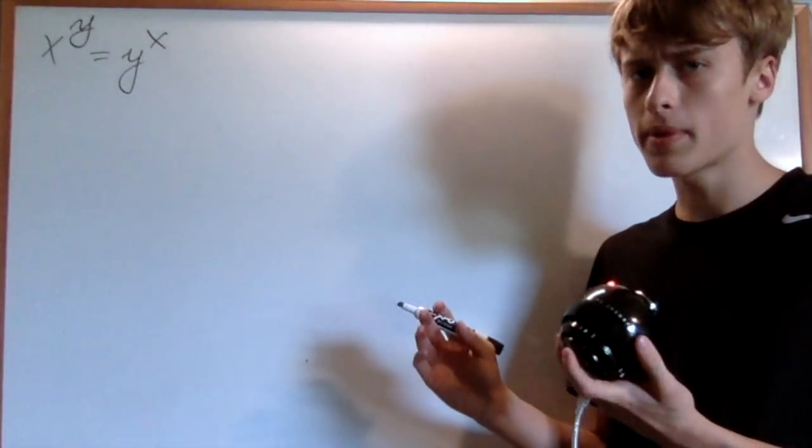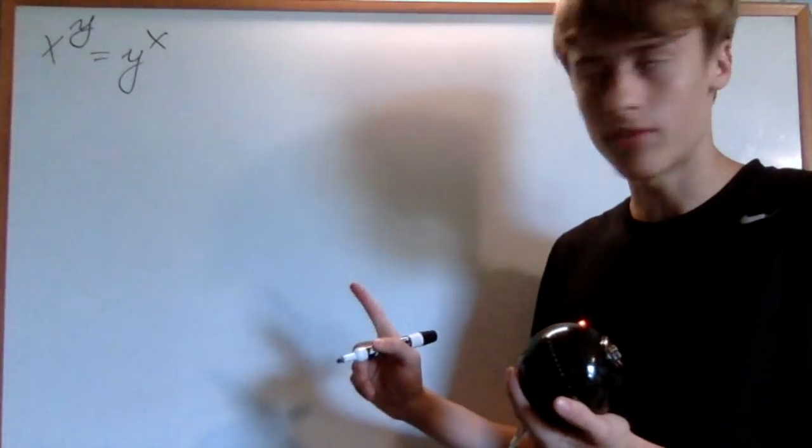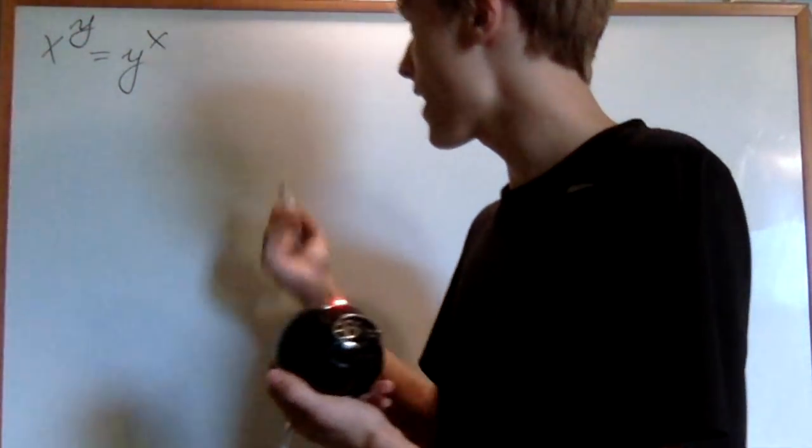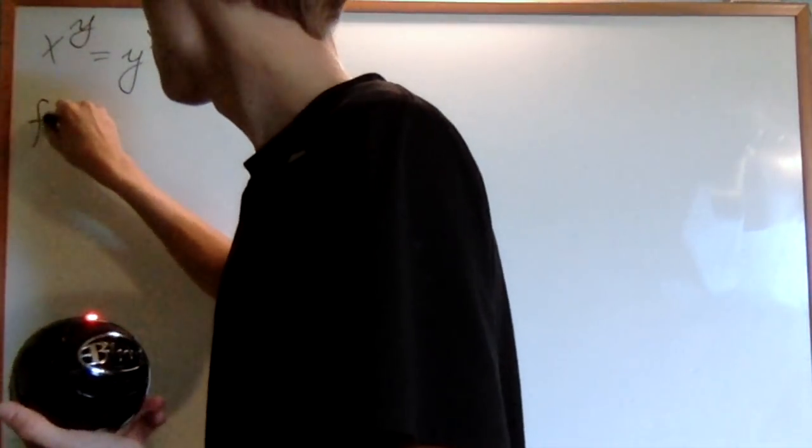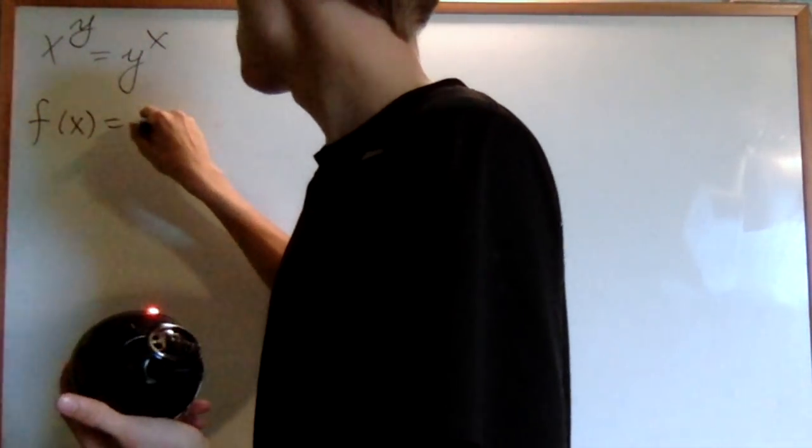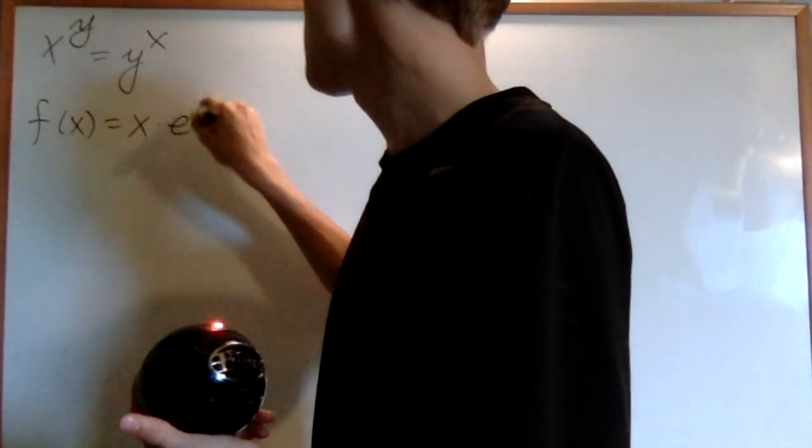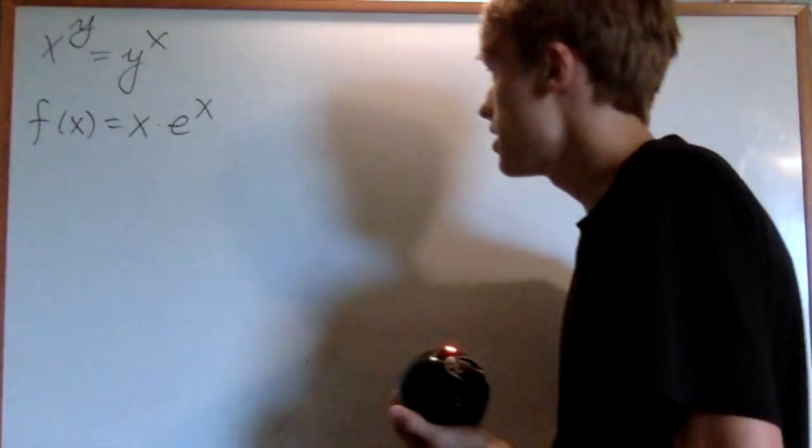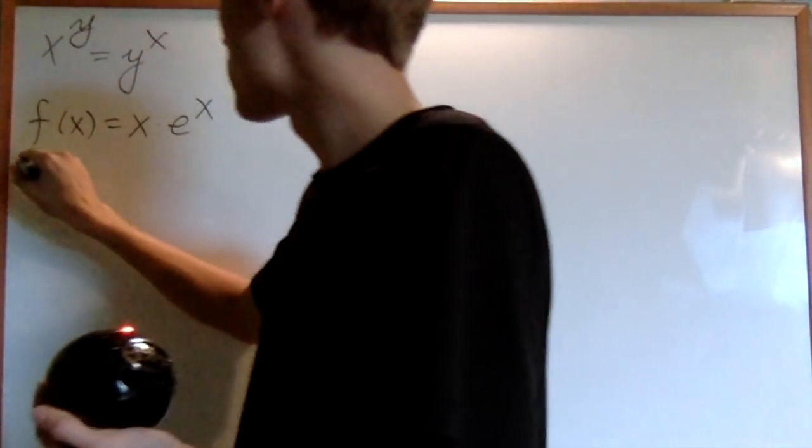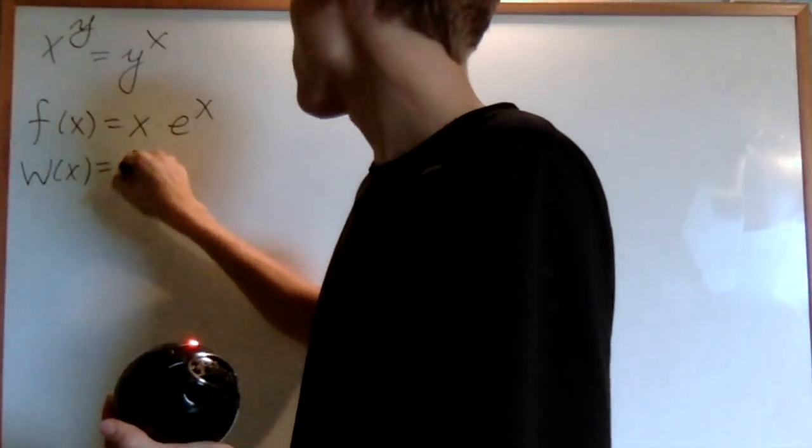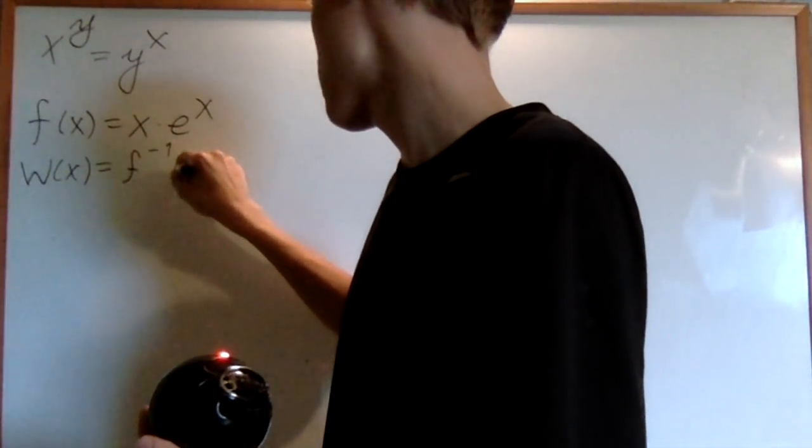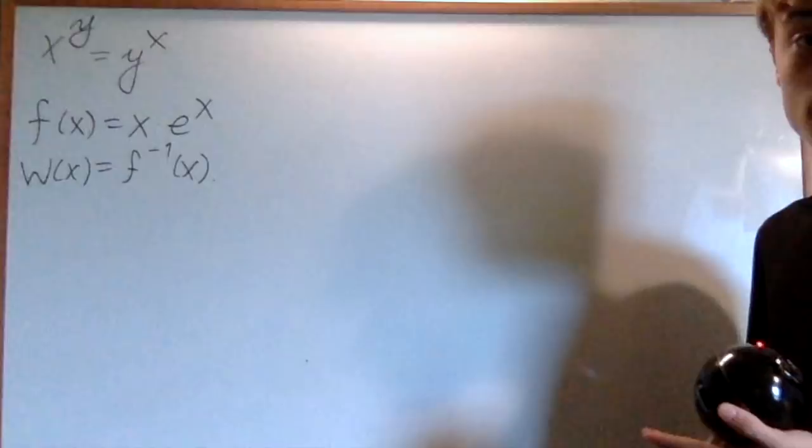The first topic I'm going to introduce is what is known as the Lambert W function. First, we're going to take a function f of x, which I'll say is just x times e to the x. Then the Lambert W function is going to be the inverse function of this. It's as simple as that.